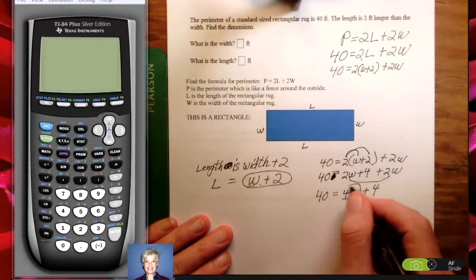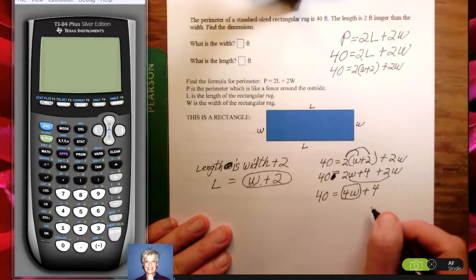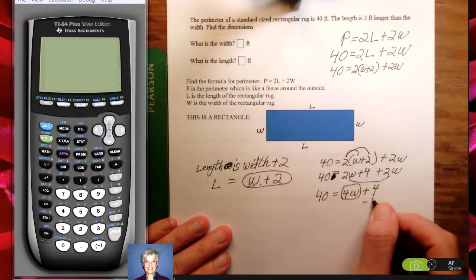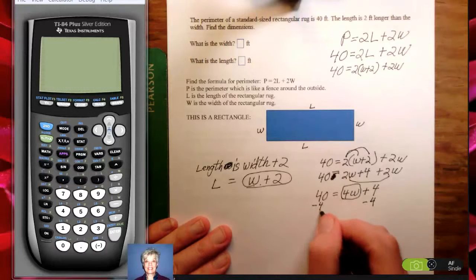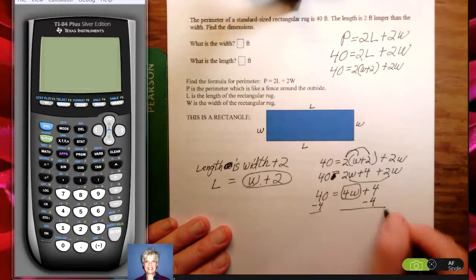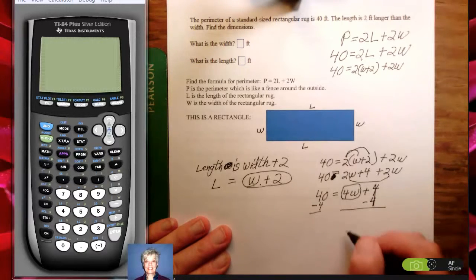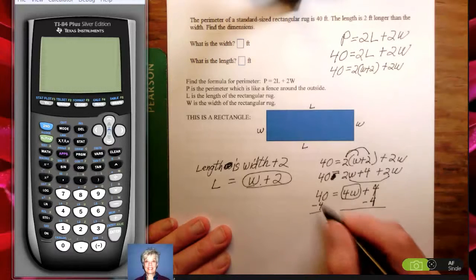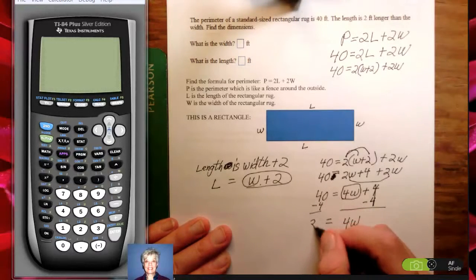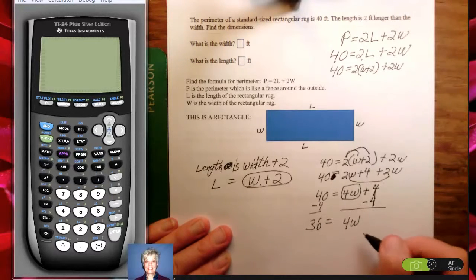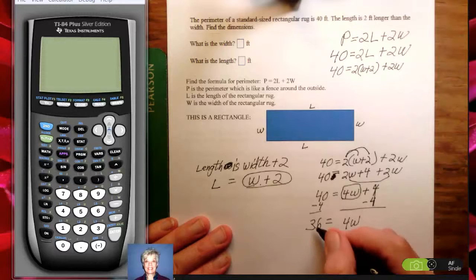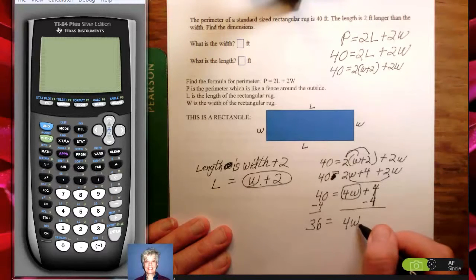I need to get the W term by itself, so I'm going to subtract 4, which is the same as adding negative 4, from both sides of the equation. Over here, 4 minus 4 is 0. Bring down the 4W. Over here, 40 minus 4 is 36. Now I'm almost done. My equation is 36 equals 4 times W.